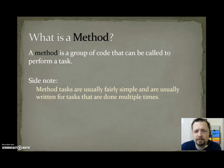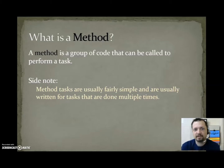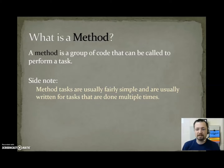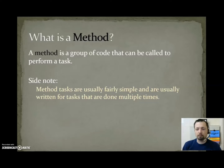What is a method? A method is a group of code that can be called to perform a task. Methods are going to be separate from main, and main can call methods by name to perform some simple task, like adding two numbers or determining what day of the week it is, all the way to performing more complex operations like solving a maze.